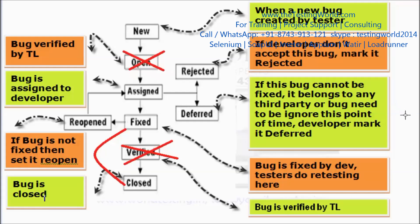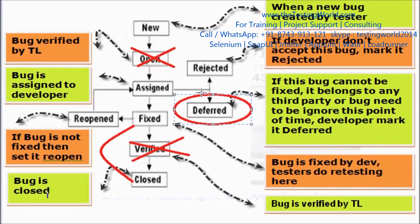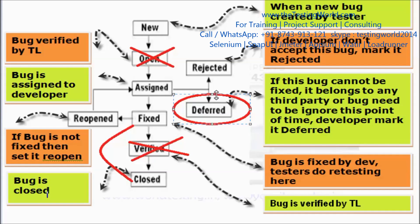Second interview question: what will you do if a developer defers your bug? If the developer deferred my bug, it's the dev lead's responsibility to check why the developer deferred it and why they're not fixing it. As a tester, I am not going to work on this defect because the developer accepted it but is not fixing it. It's the dev lead's responsibility — not mine as a tester.